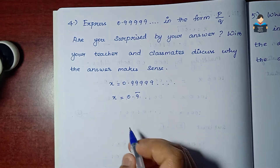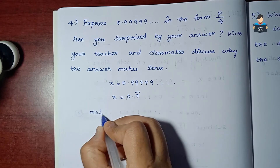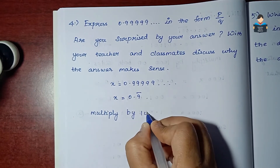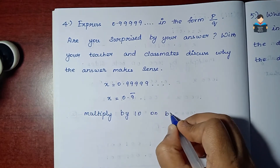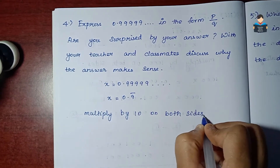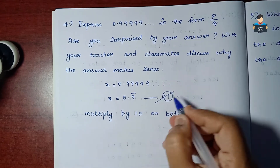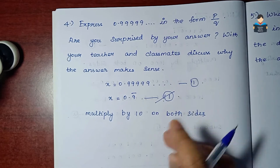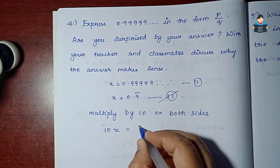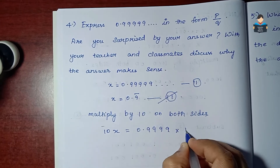To solve this, we multiply both sides by 10. This gives us equation 1: x equals 0.9999... and we proceed to get equation 2 by multiplying 10 from both sides.